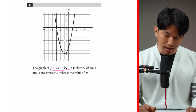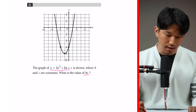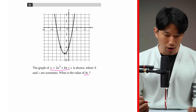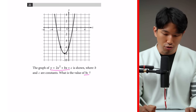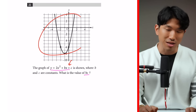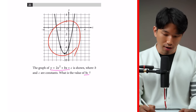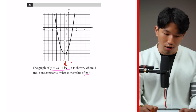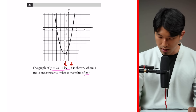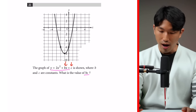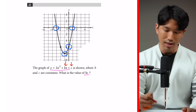Question two: the graph of a parabola is shown where B and C are constants. What's the value of B times C? This is a typical parabola question but involves multiple steps. Most SAT questions give us an equation and we work with the graph, but this question is the other way around — they give us the graph and ask us to figure out parts of the equation. We can see the vertex, Y-intercept, and X-intercepts from the graph.